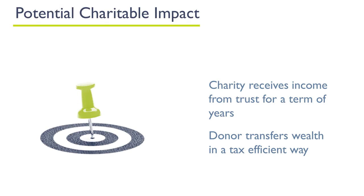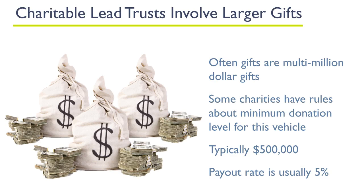The charitable lead trust will benefit from the expert asset management of the charity, and this planned giving vehicle makes an immediate impact on the charity because the charity is receiving the income from the charitable lead trust for that term of years. The goal for the donor is to find an opportunity to transfer wealth to heirs in a tax-efficient way and also make an immediate impact on a charity. These are typically larger gifts — some charities have rules on minimum amounts, but a general rule is somewhere around five hundred thousand dollars and above. In most circumstances, you're probably going to see these are multi-million dollar gifts.